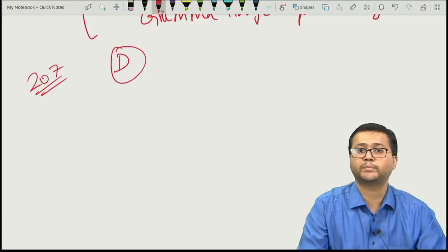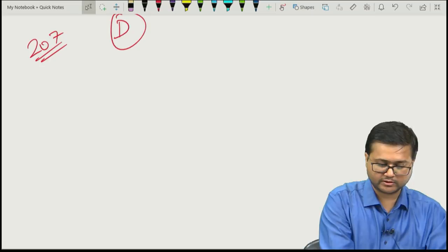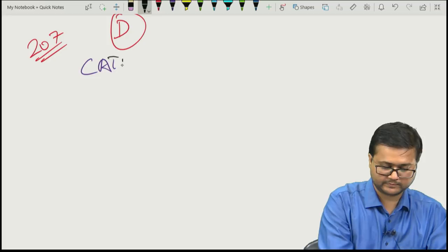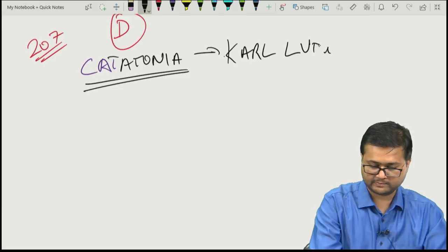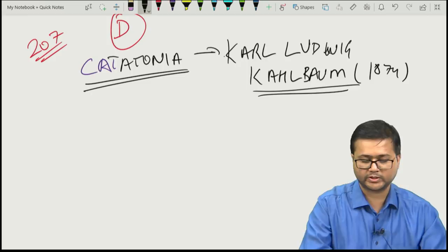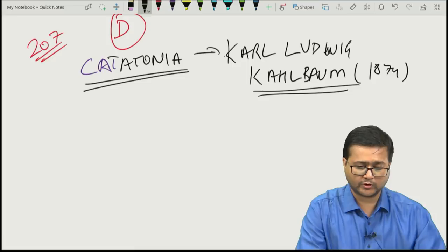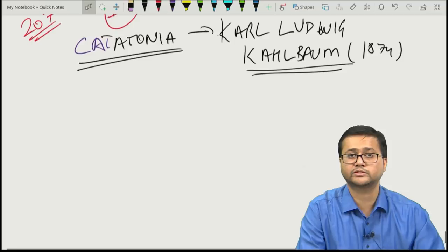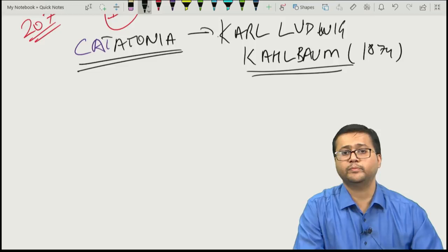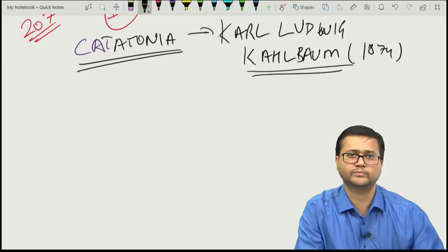The term catatonia was described by Carl Ludwig Kahlbaum in 1874. Catatonia involves symptoms of motor dysfunction. Let us discuss the important clinical features of catatonia. One patient may have some symptoms and another may have different ones.